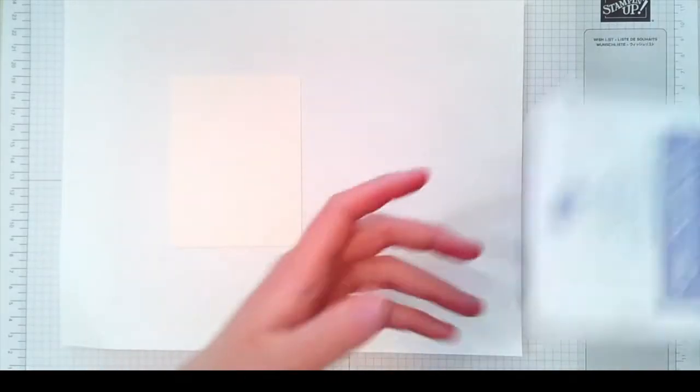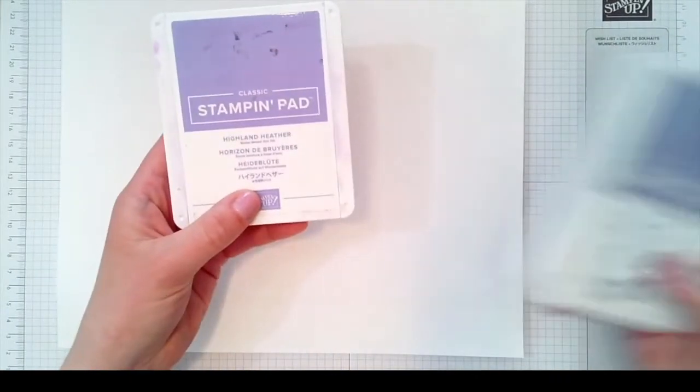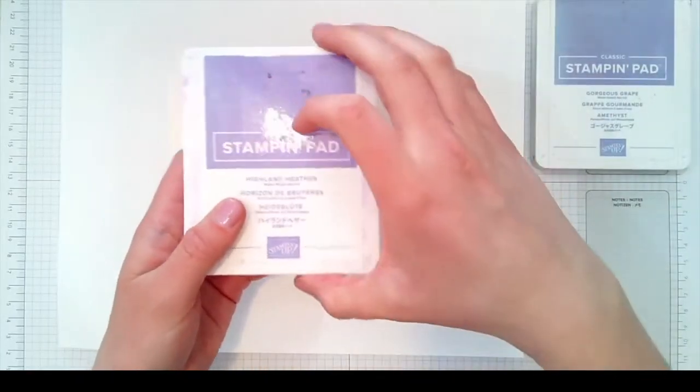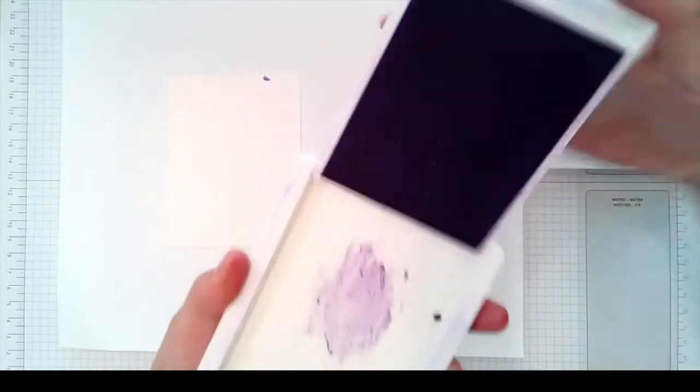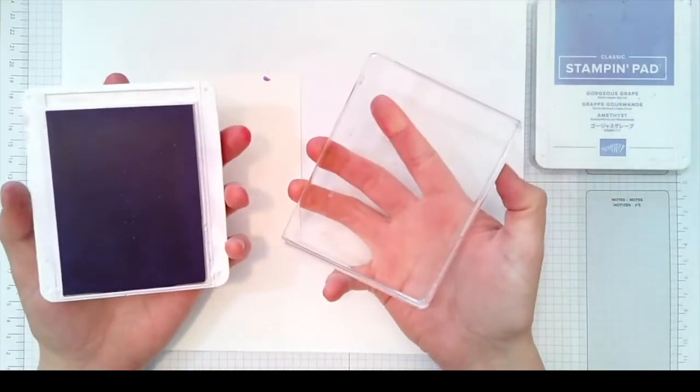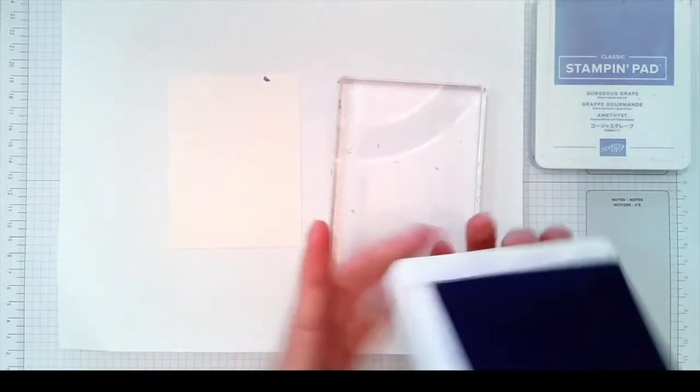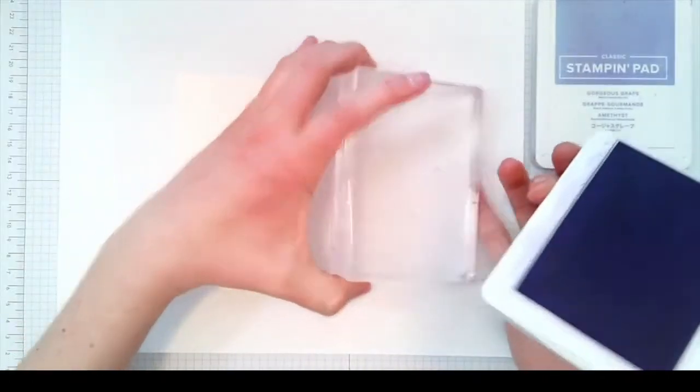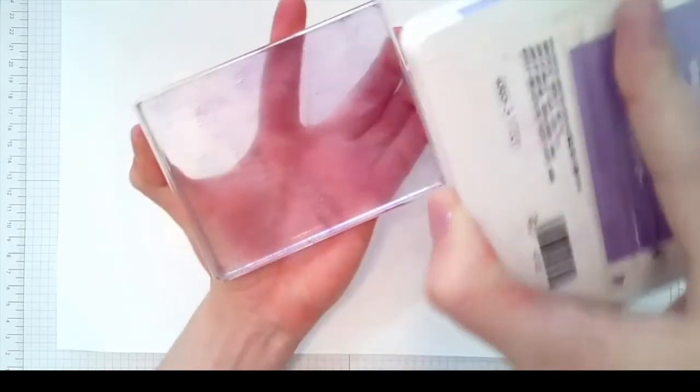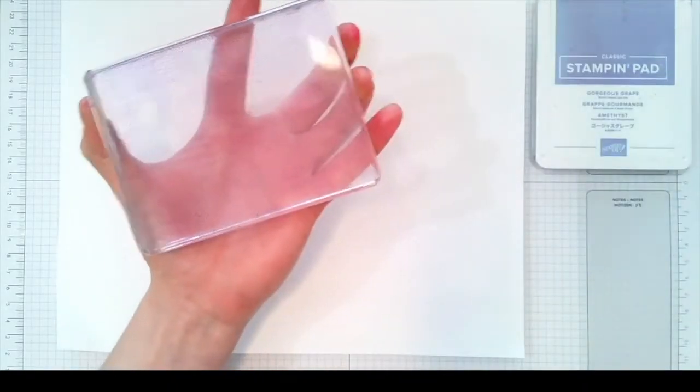I used Highland Heather and Gorgeous Grape inks. I'm gonna start with Highland Heather since that's the lighter color. I have the size E acrylic block here and I'm just going to ink it up like I would a stamp. You're gonna pretend like there's a stamp on here but there's really not.